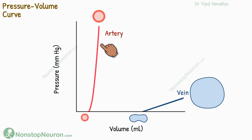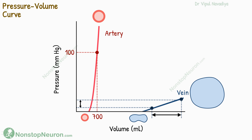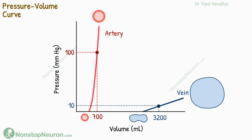The red line is for the arterial system — it shows a relatively small rise in volume even over a large rise in pressure. For arteries, the normal set point shows the volume of all blood in arteries, including large arteries, small arteries, and arterioles, at about 700 milliliters and a mean arterial pressure of about 100 millimeters of mercury. The blue line is the pressure-volume curve of veins, showing that a small increase in pressure causes a large increase in volume. Its normal set point is where the volume is about 3,200 milliliters.